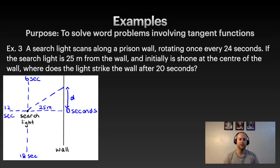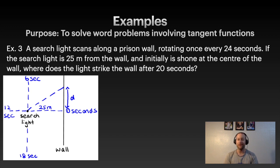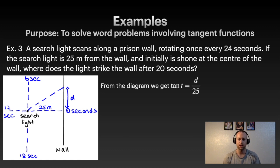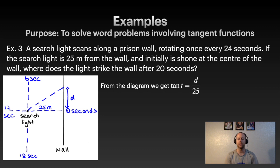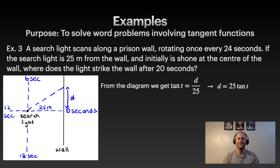From the diagram, we have a right triangle where 25 meters is the horizontal distance and d is the vertical distance. Since this word problem deals with time as the variable, we write tan(t) = opposite over adjacent = d/25. Rearranging, we get d = 25 tan(t). Next, we need to figure out the b value.